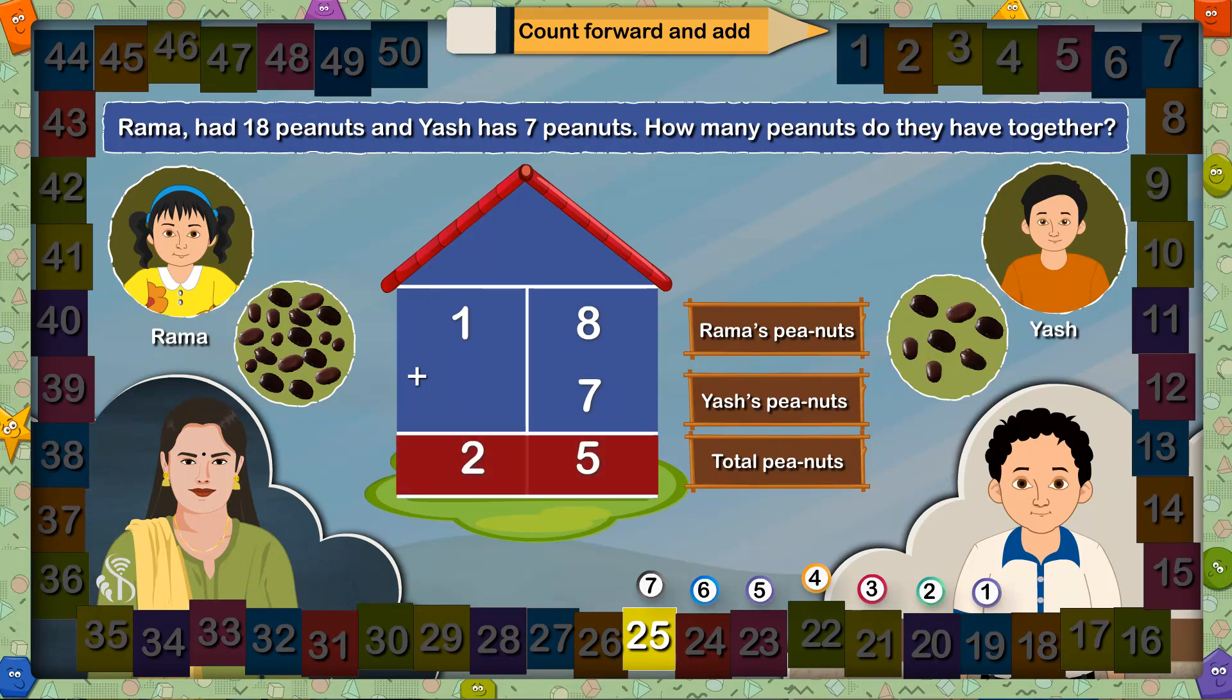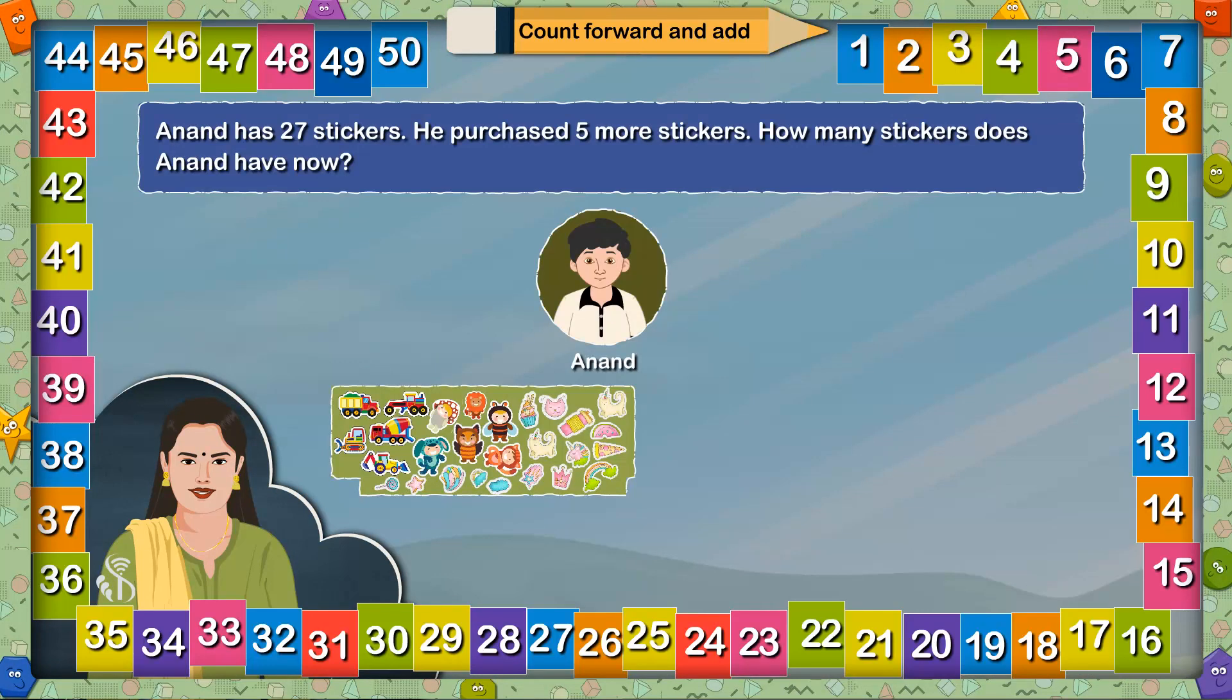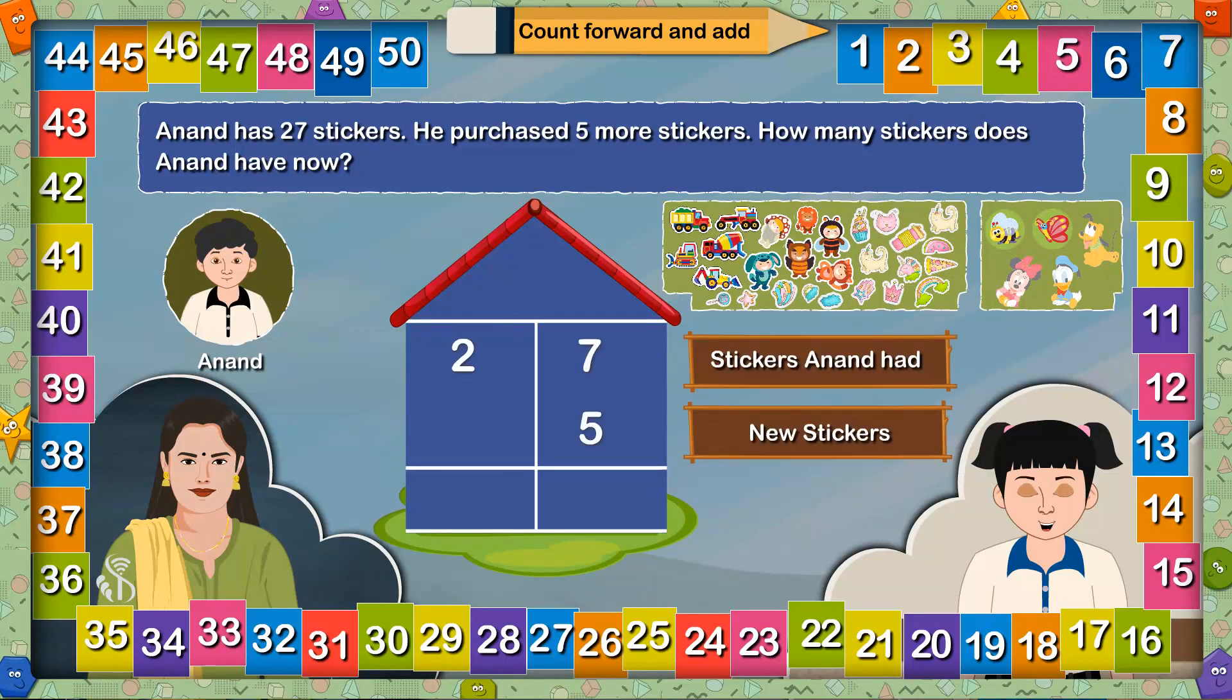Anand has 27 stickers. He purchased 5 more stickers. How many stickers does Anand have now? Now tell me, what is given here? Anand's stickers. What is asked? Total number of stickers. What is to be done?